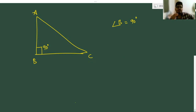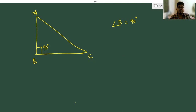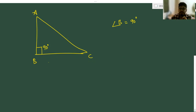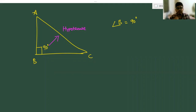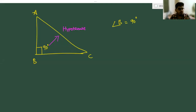We have some basic definitions about the right angle triangle. We are having three sides. The side which is opposite to the 90 degree is called the hypotenuse. Note one thing: 90 degrees and hypotenuse are fixed — they will never change. If you can identify the 90 degree, opposite to it will be the hypotenuse.